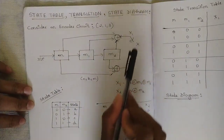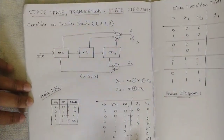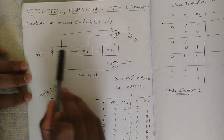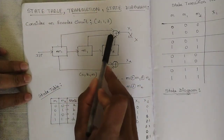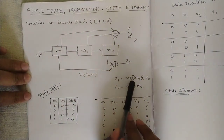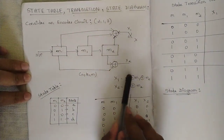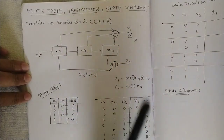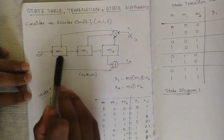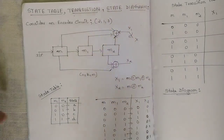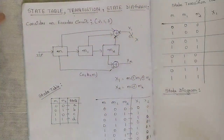We have taken 2 outputs x1 and x2. From the flip-flops or shift registers m, m1, and m2, all three feed into x1, so x1 = m ⊕ m1 ⊕ m2. For x2, only m and m2 branches meet, so x2 = m ⊕ m2.